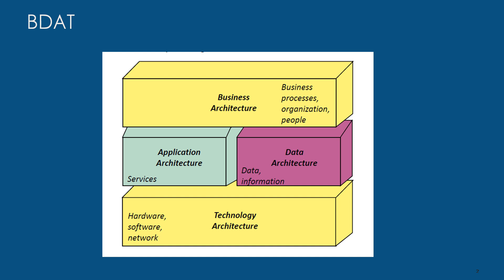There are four types of architecture that TOGAF deals with: business architecture, data architecture, application architecture, and technology architecture. To remember them, you can refer to the acronym BDAT, which stands for business, data, application, and technology.